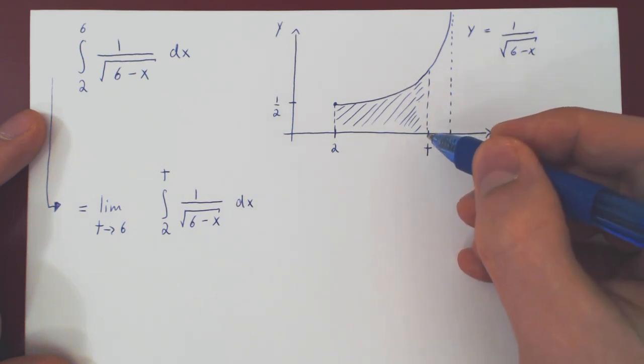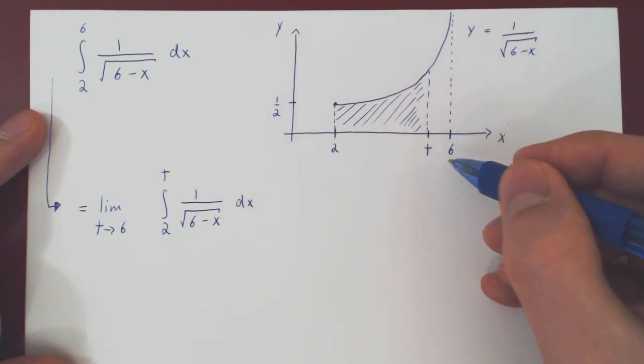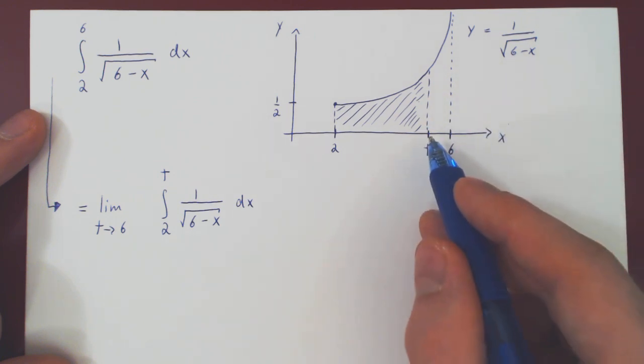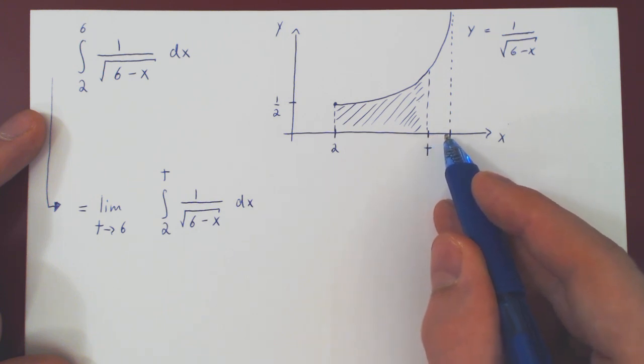t could be less than 6, or t could be also bigger than 6. And since we have to avoid the discontinuity altogether, we have to let t approach 6 from the left.